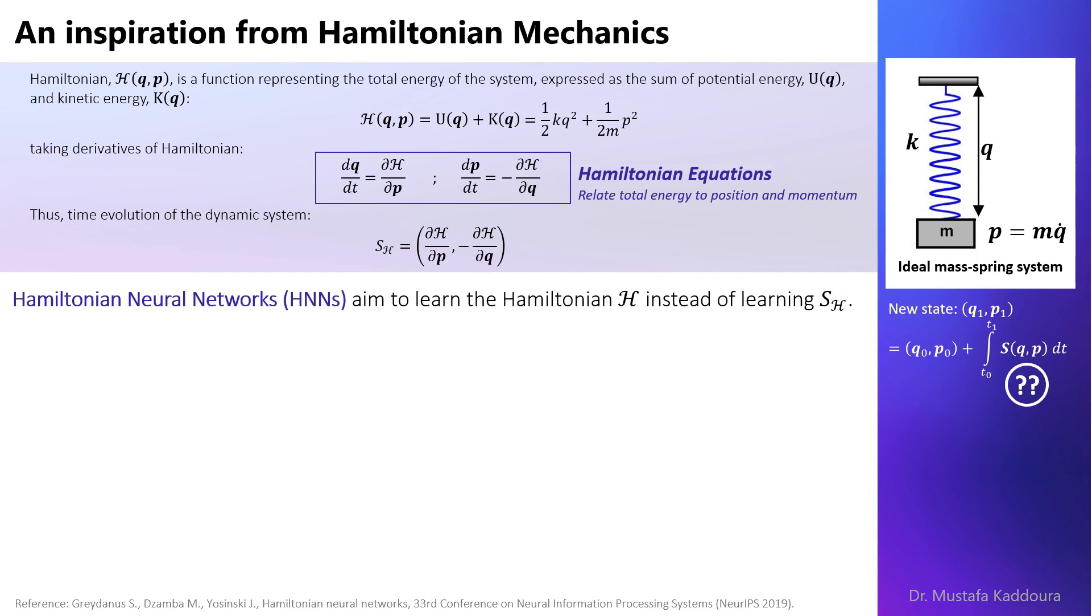To have a visual representation, traditional neural networks receive the q and p as input and tend to predict the time derivative s directly.